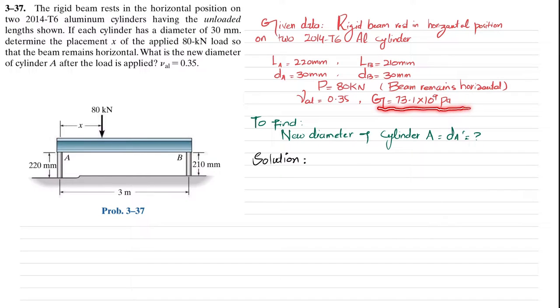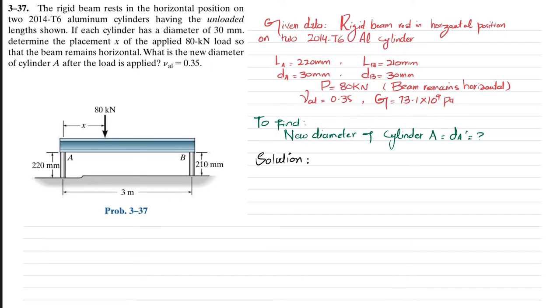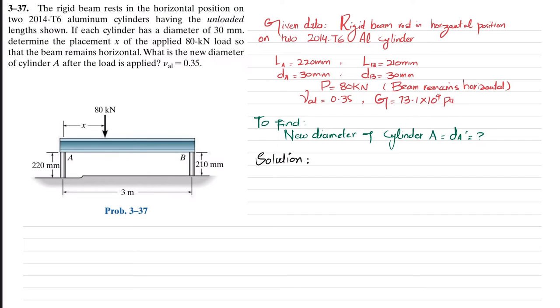The modulus of elasticity for the 2014-T6 aluminum cylinder is 73.1 × 10⁹ Pa. We have to find the new cylinder diameter as well as the load placement distance x. Let's start with the solution.